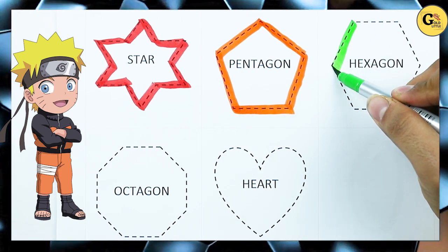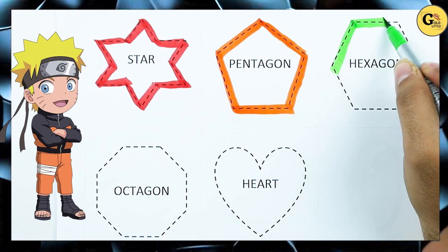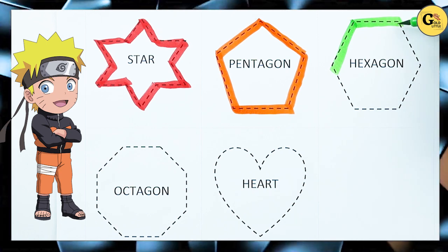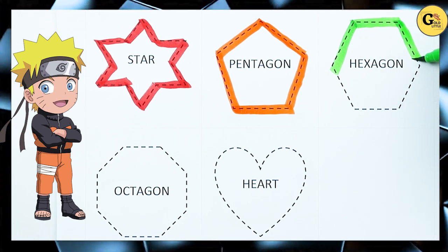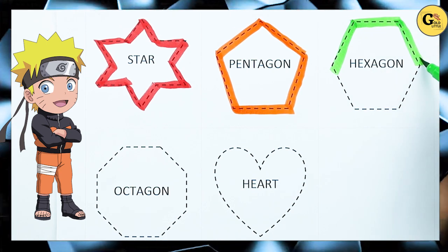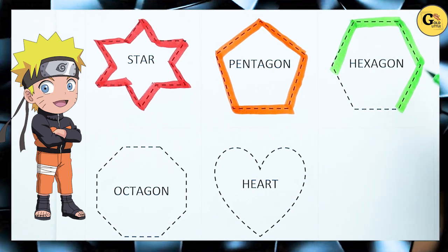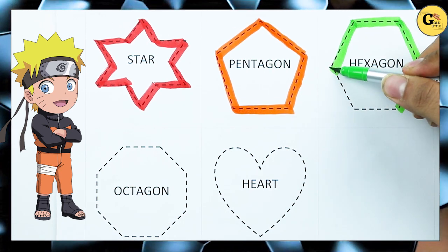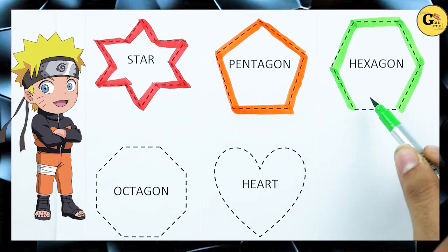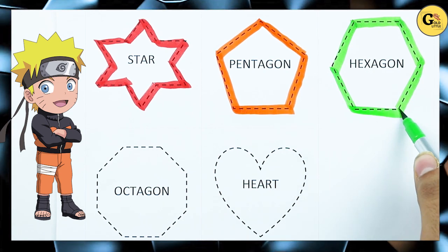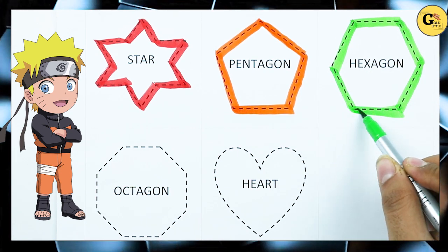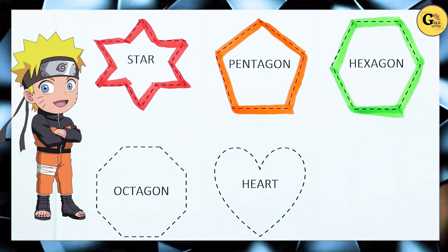Hexagon: one line, two line, three line, four line, five line, six line. It's hexagon.